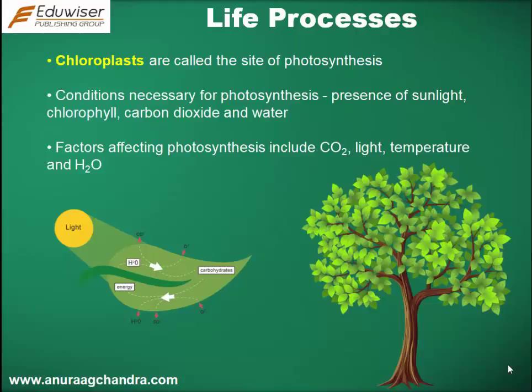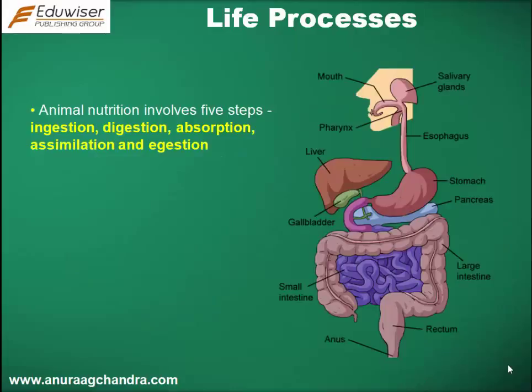Factors affecting photosynthesis include carbon dioxide, light, temperature, and water. Animal nutrition involves five steps: ingestion, digestion, absorption, assimilation, and ejection.